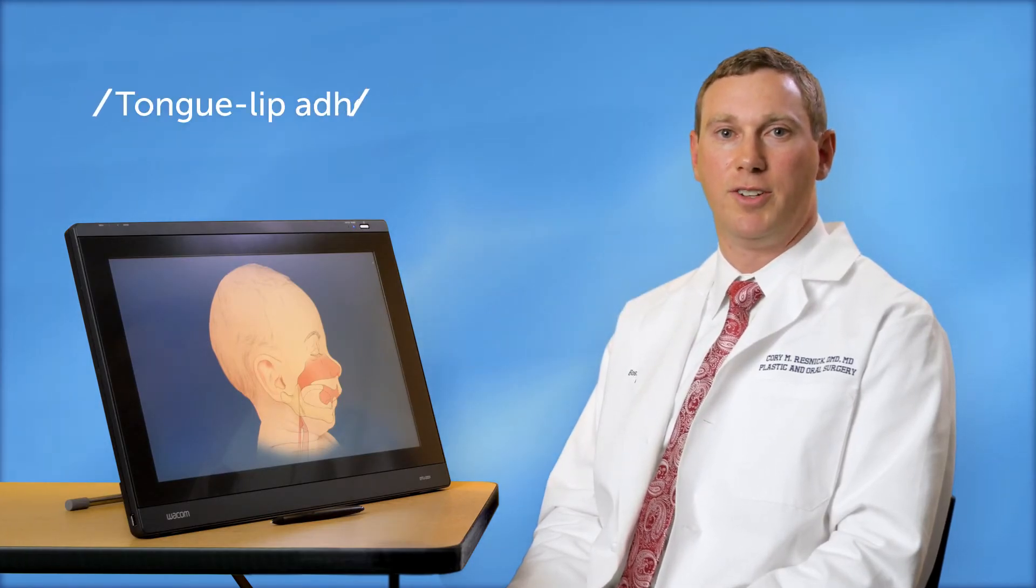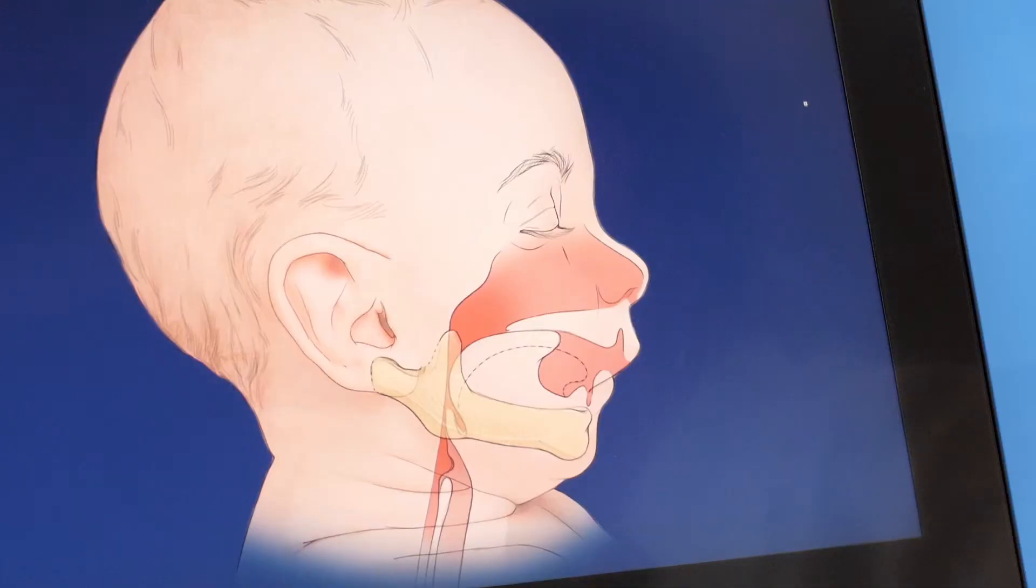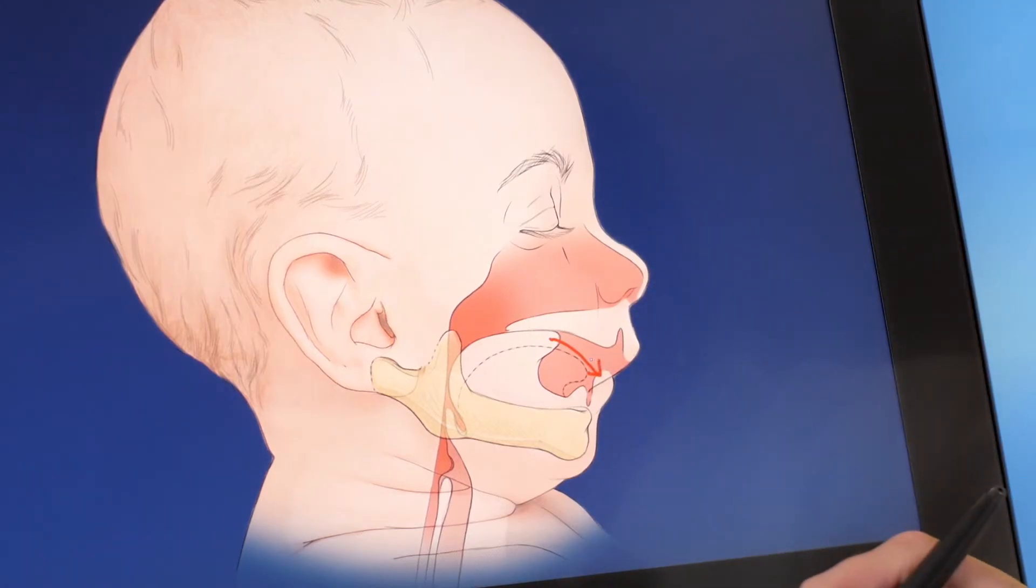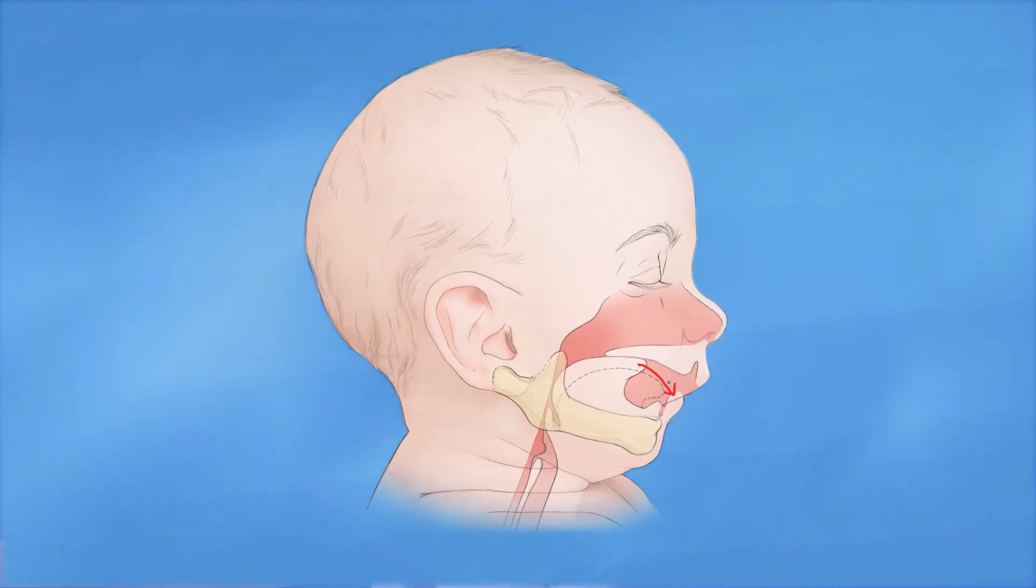The first of these is called a tongue lip adhesion. A tongue lip adhesion is an operation that brings the tongue forward and attaches it to the lower lip with sutures. Sometimes this also involves placing sutures around the lower jaw. This brings the back of the tongue forward and away from the airway, allowing air to pass more easily from the nose into the lungs.